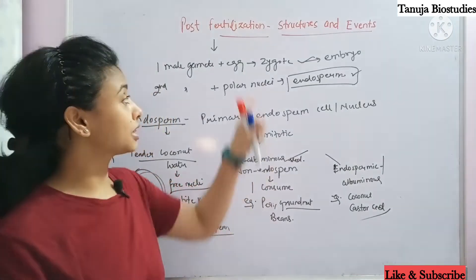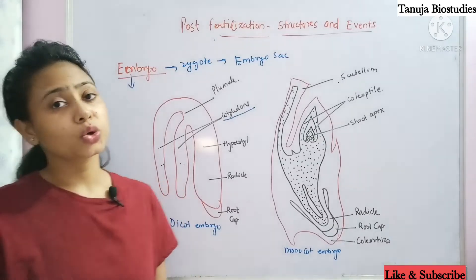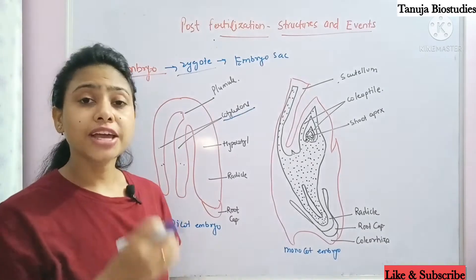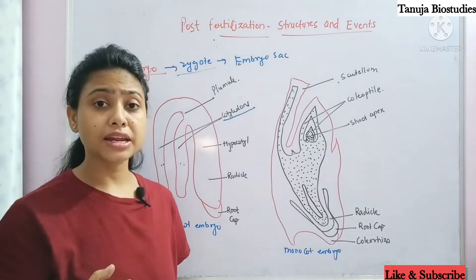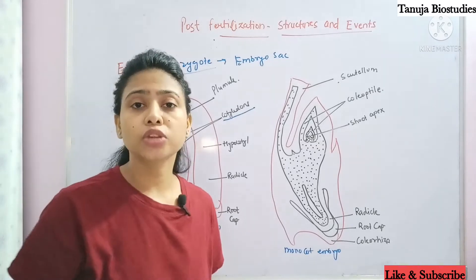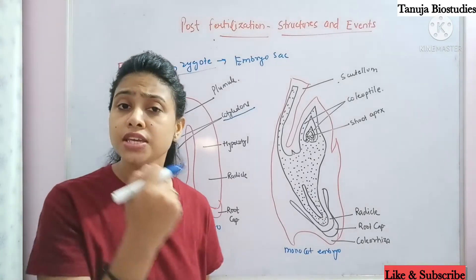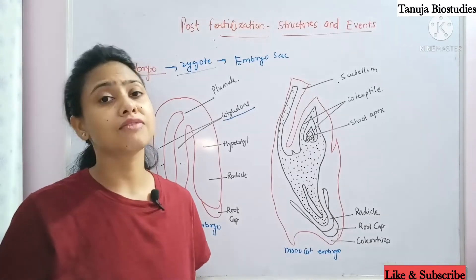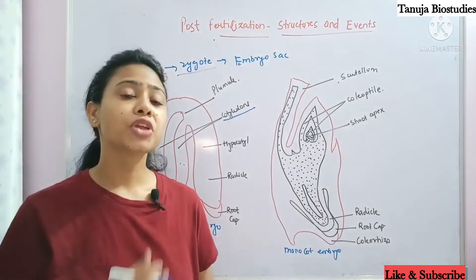Now we talk about the embryo, which develops from the zygote. The zygote is present in the embryo sac. When it becomes an embryo, it ensures the endosperm starts development first — because as soon as the embryo starts its growth, it needs nutrition, so the endosperm makes nutrition available.